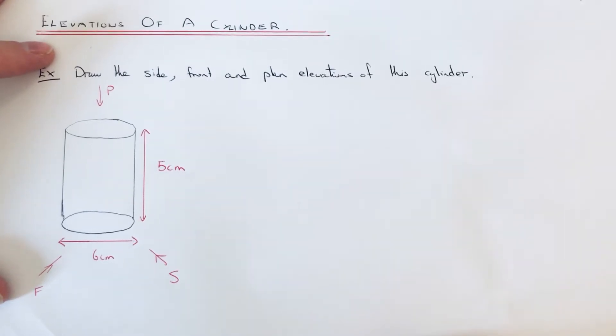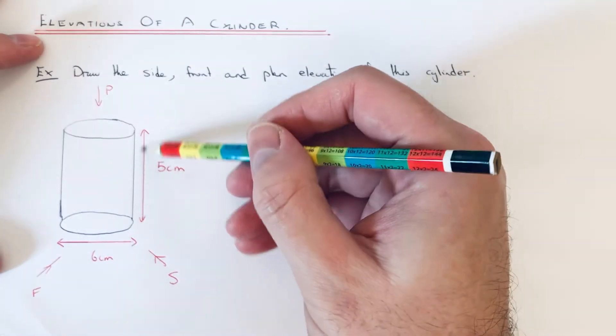Hi guys, welcome back. This is Mass 3000. Today I'm going to show you how to draw the elevations of a cylinder. The cylinder has a diameter of 6 and a height of 5.